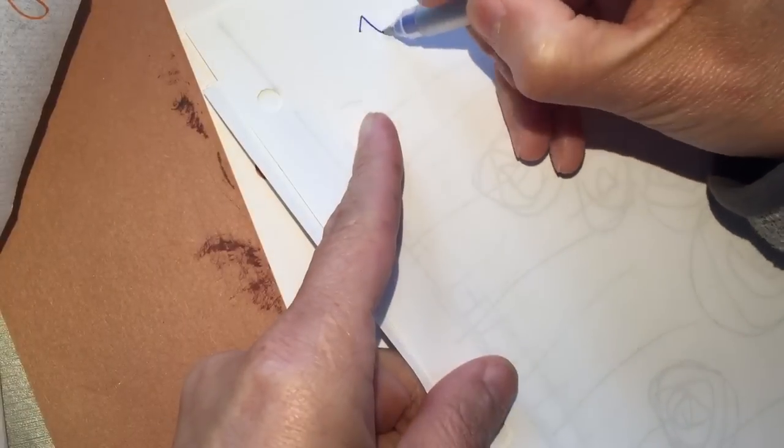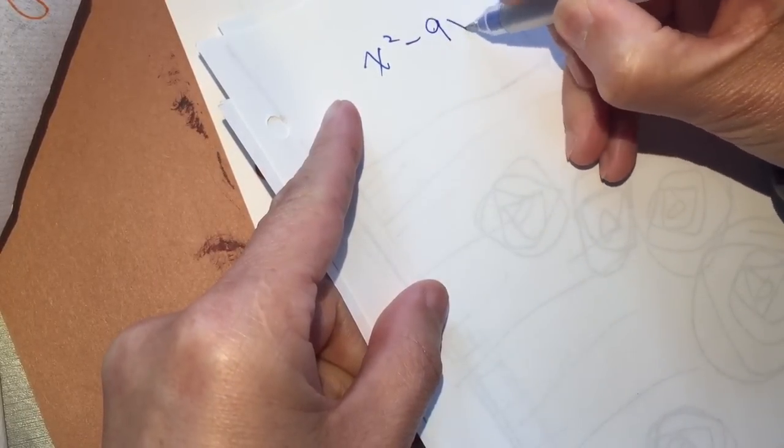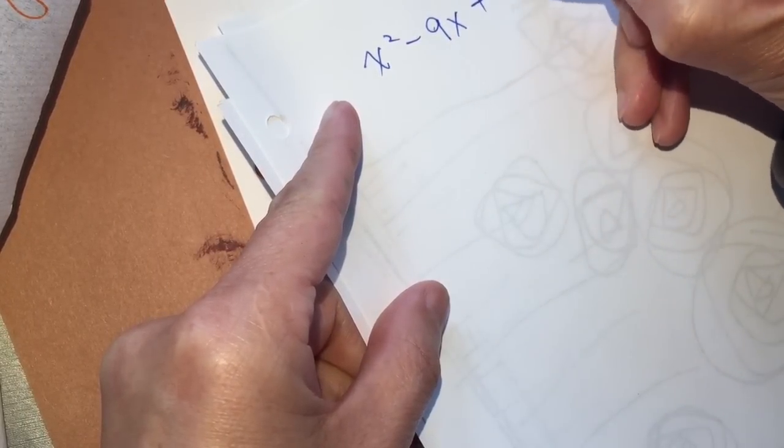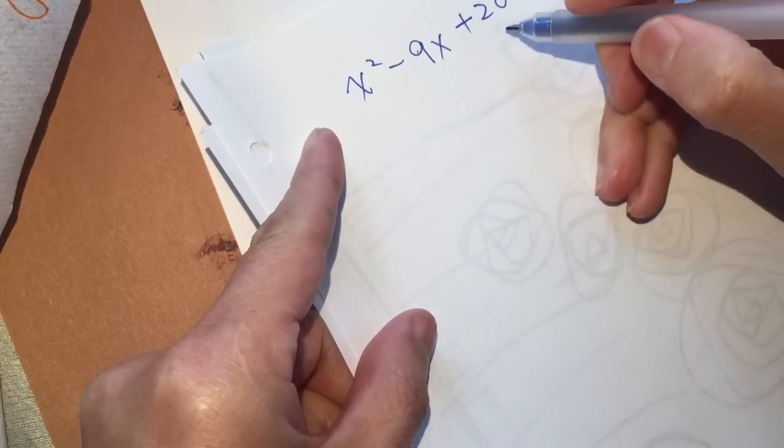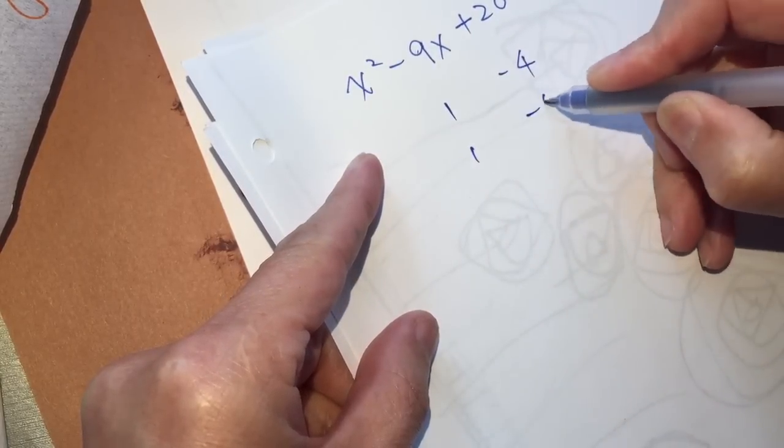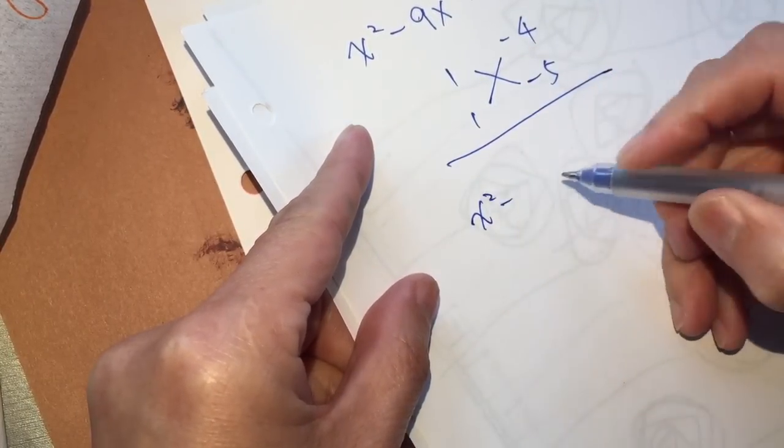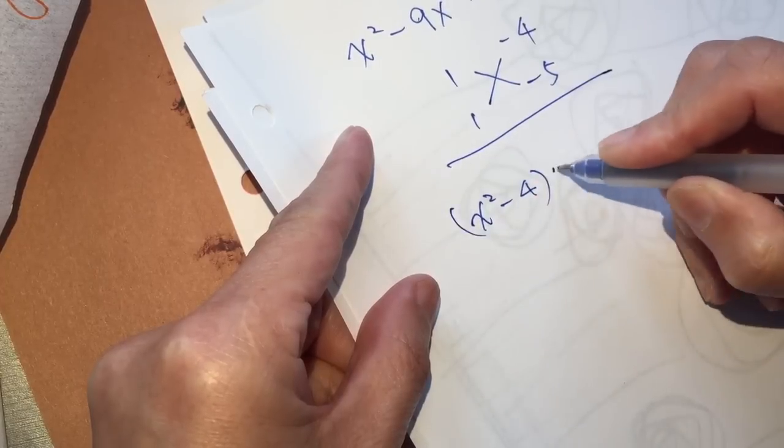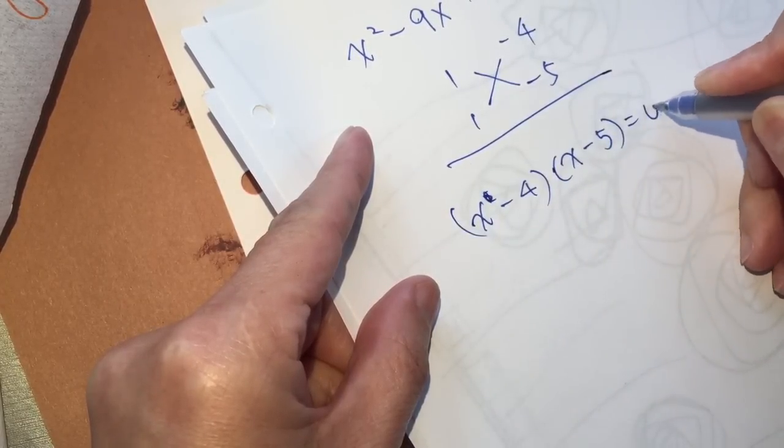Okay, another one. x 平方减九 x 加二十. So, 四五二十, four times five is negative four, negative five. So, x 平方减四乘, no, x 减四乘 x 减五等于零.